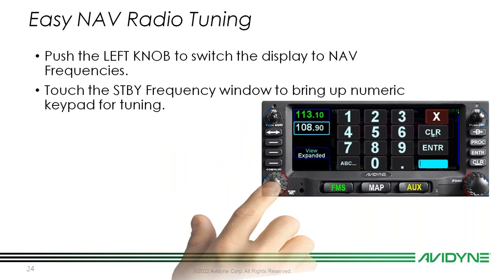Nav radio tuning is exactly the same and just as simple. Push the left knob to switch the display to your nav frequency. On the 440, there isn't enough room to show both comm and nav frequencies simultaneously, so just push that lower left knob once to bring up nav frequencies. Touch the standby frequency window to bring up the numeric keypad — same as comm tuning. No need to punch in all the numbers or a decimal; it knows you're in the 100 MHz band.